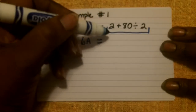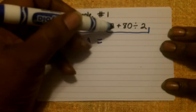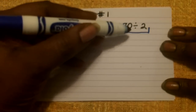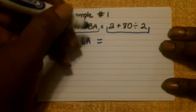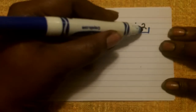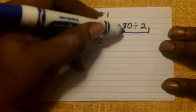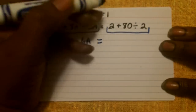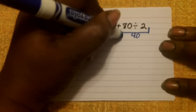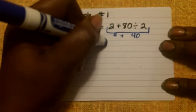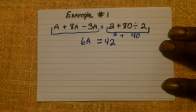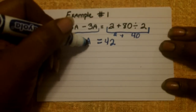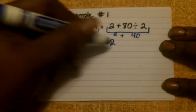Now on the right-hand side of the equal sign, we have two plus 80 divided by two. If we think back to unit one, order of operations is going to ask me to divide first. So that will be 80 divided by two, which is 40. And to that 40, we will add two, bringing the total to 42. So 6a equals 42.